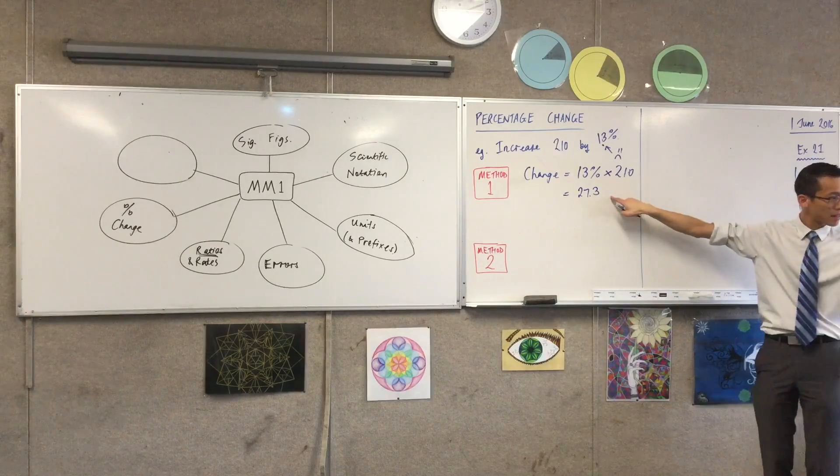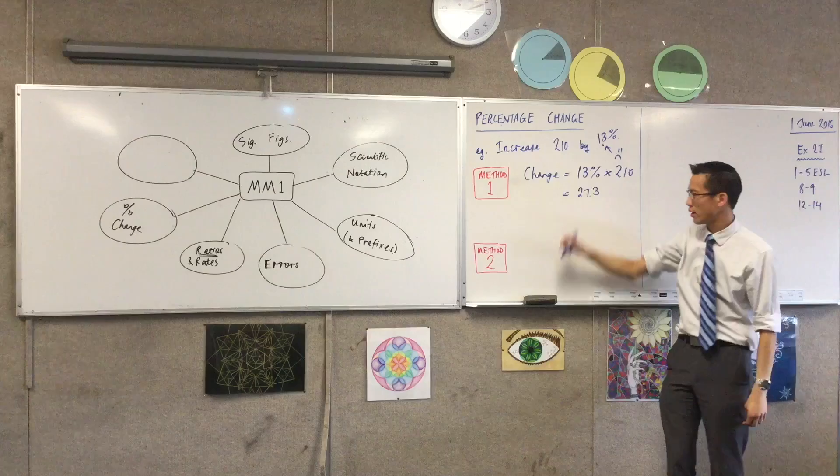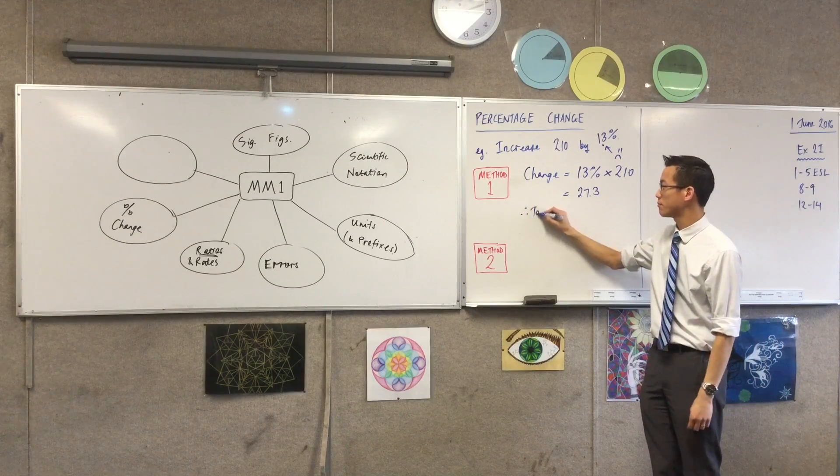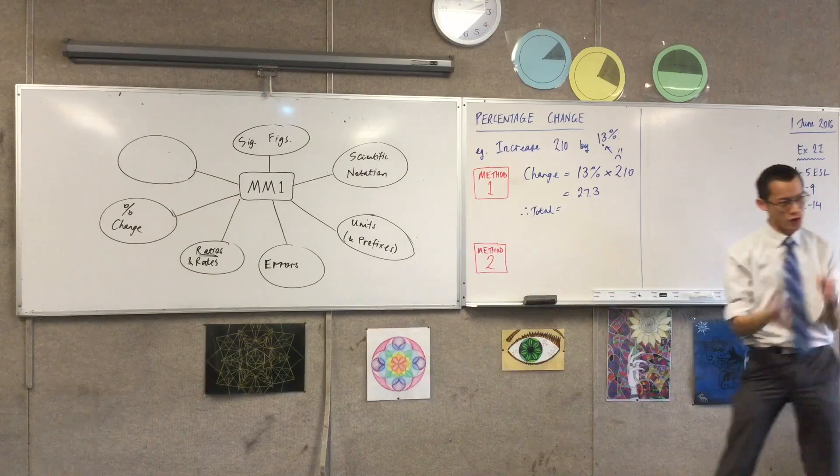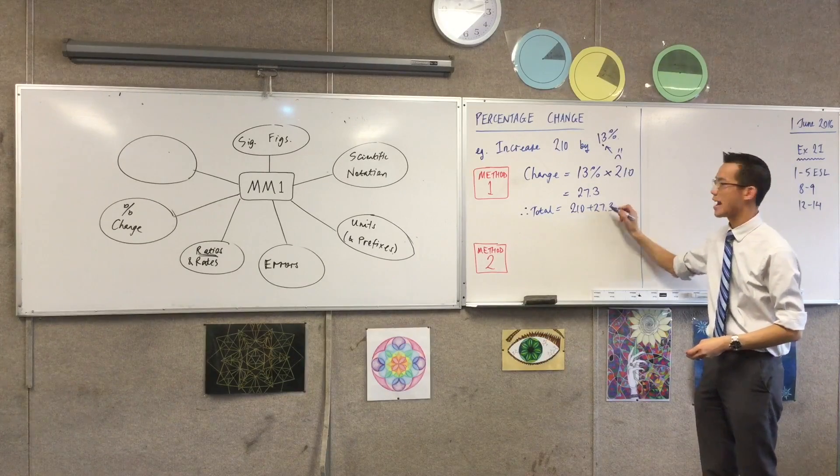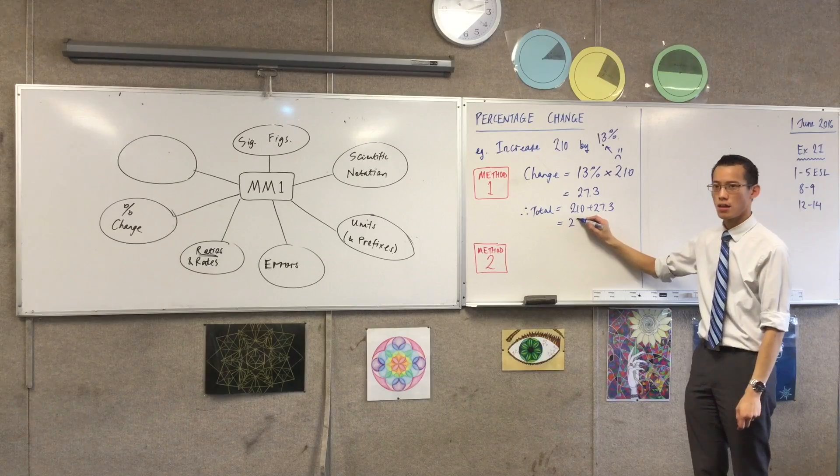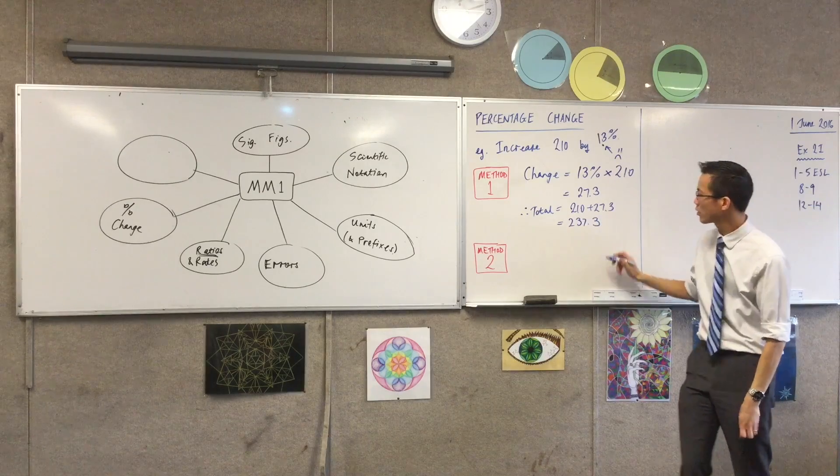So just add that to the normal one. Excellent. So this is the amount that I go up by. So the actual thing that I'll end up with, therefore, I guess I'd say the total, is the original amount you started with, plus the increase. 210, plus that increase that we just calculated to change. So what's that? 237.3. Done.